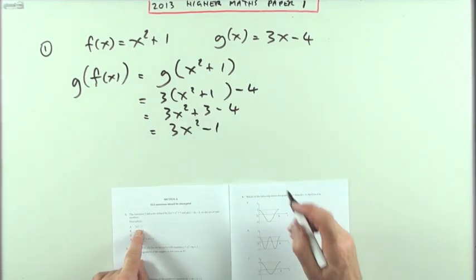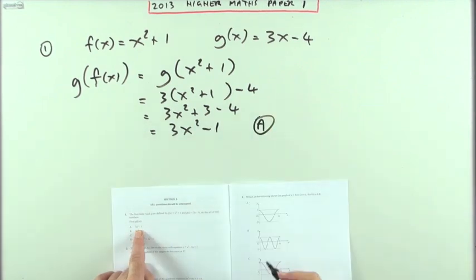Check the answers. One, part a, 3x squared minus one. Done.